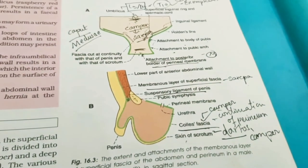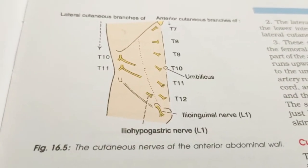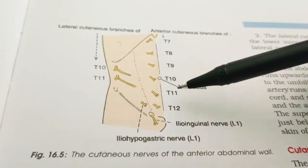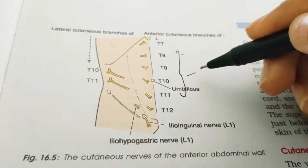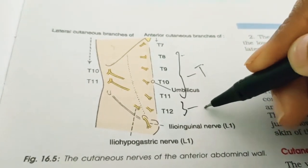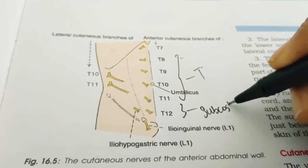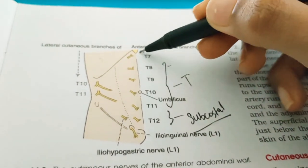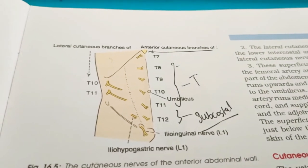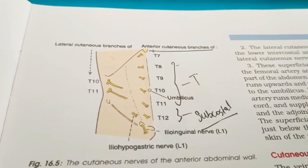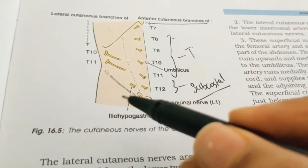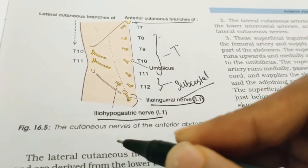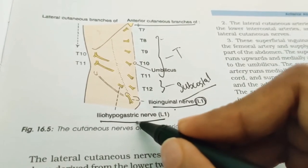Now we discuss the cutaneous nerve supply. The skin of the anterior abdominal wall is supplied by the lower six thoracic nerves, T7 to T11, plus T12 — the subcostal nerve — and the first lumbar nerve via the iliohypogastric nerve. These nerves give anterior cutaneous branches to the anterior abdominal wall.